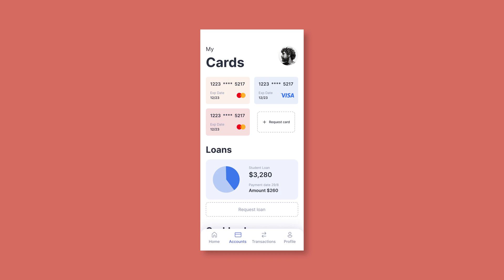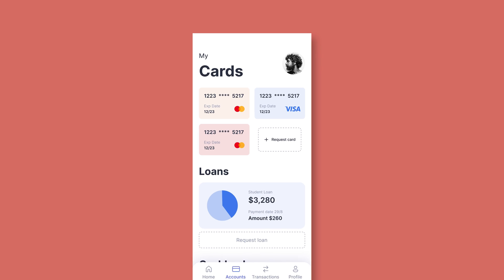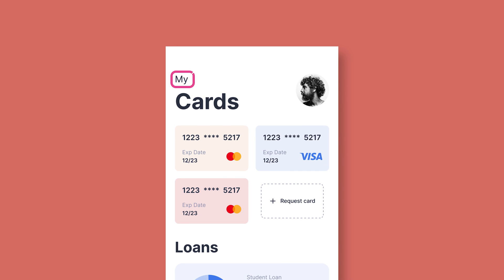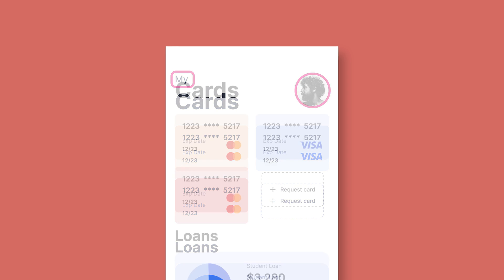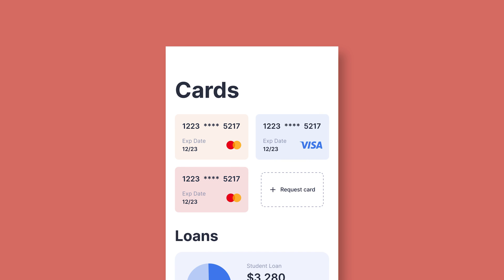Now let's proceed to the second screen. The first mistake I spot here is duplicates. Design consistency doesn't mean that solutions should duplicate, especially if they are not functional. On the first screen, the title is the amount of money and the label is 'available balance.' On the second screen, however, we can only see the title cards. The user profile button duplicates too, but on the second screen it only disrupts the user from the main content. I got rid of the small label to provide more vertical space, and the same goes for the user profile.